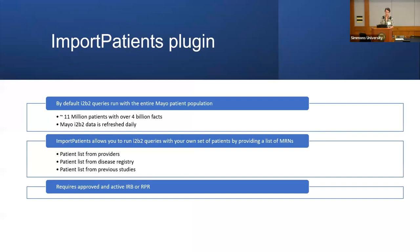I'll start with the I2B2 Import Patients plugin. We know that by default, when users run I2B2 queries, they run against the entire patient registry. At Mayo we have over 11 million patients in our patient registry and over 4 billion facts. We refresh daily, so it keeps increasing. Some of these queries result in very large patient sets.